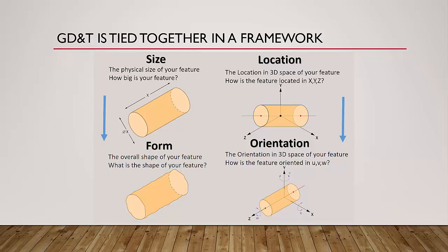Size is the tolerance of how big something is, like a width or a diameter. Location is a tolerance of how far that feature is from other critical features. Orientation is similar, and is simply how tightly angled the feature is to other features. And finally, form is the tolerance for how tightly the features must adhere to a given shape. Every symbol or concept in GD&T is controlling one of these elements, or a combination of them.